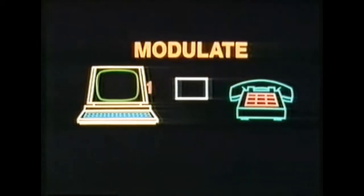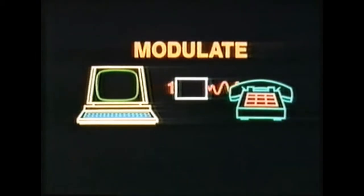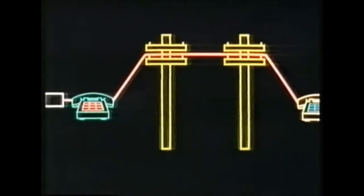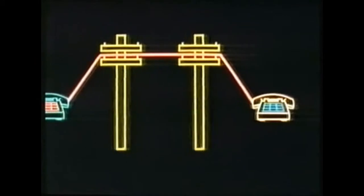So you need to put a special black box between the computer and the telephone to transform or modulate computer talk into telephone talk. Then whatever you type in at your computer can go out over the phone lines and be understood by any other telephone.